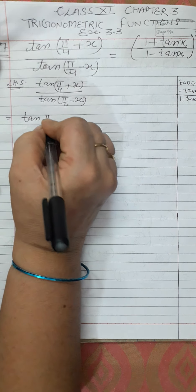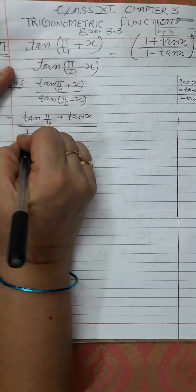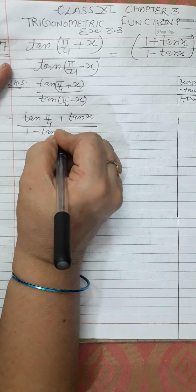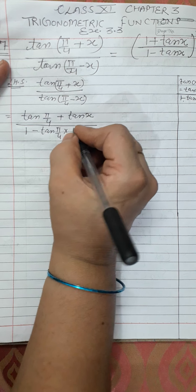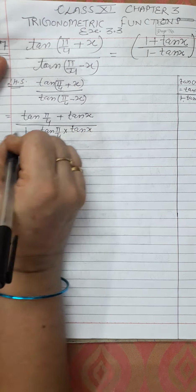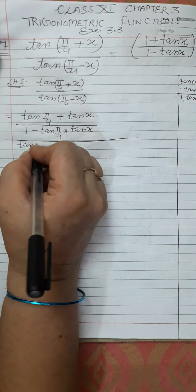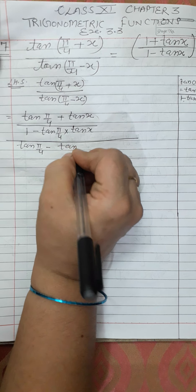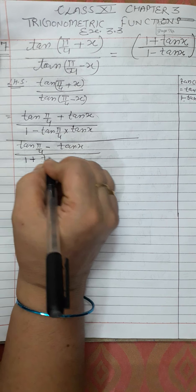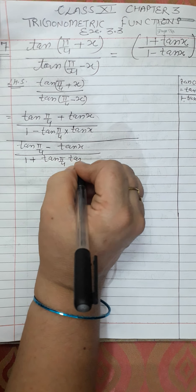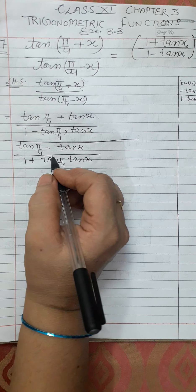Applying the identity: numerator becomes tan(π/4) + tan(x) upon 1 − tan(π/4)·tan(x). For the denominator, we apply the difference identity: tan(π/4) − tan(x) upon 1 + tan(π/4)·tan(x). We are working through numerator and denominator using these two identities.